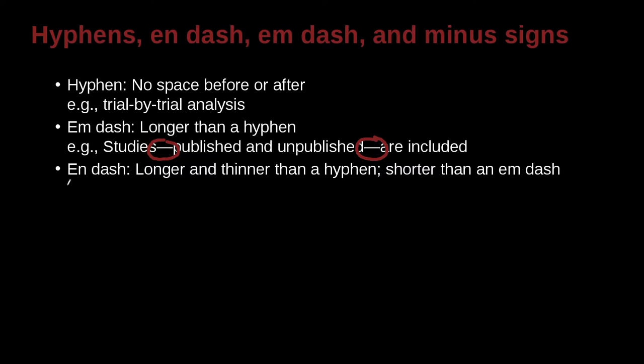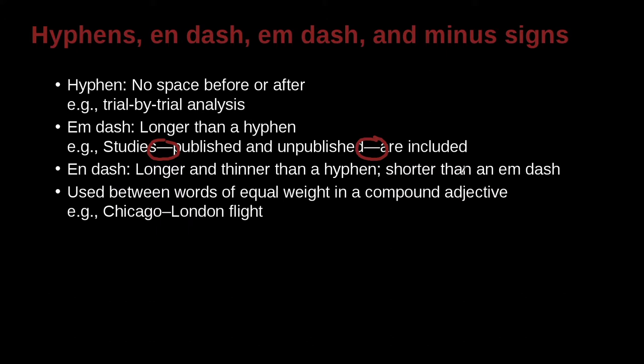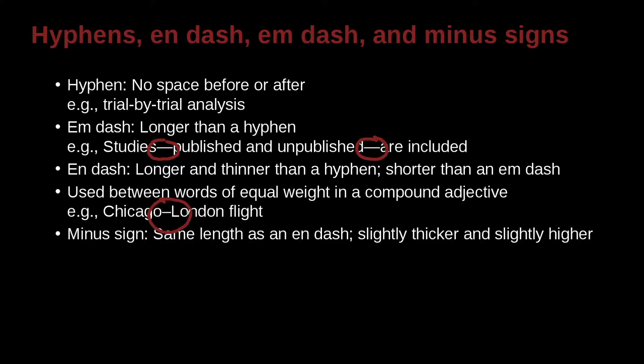An en dash, please pay attention here, em and en. En dash is longer and thinner than a hyphen and shorter than an em dash. Boy, that's getting confusing, isn't it? Here's an example. Use between words of equal weight in a compound adjective such as this, Chicago-London flight, meaning Chicago to London flight. And then we also have a minus sign. A minus sign is the same length as an en dash, but it's a little bit thicker and slightly higher.